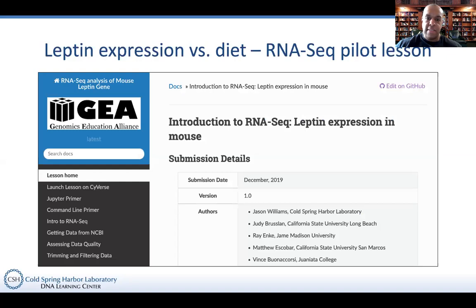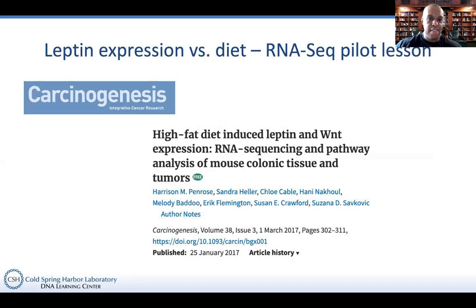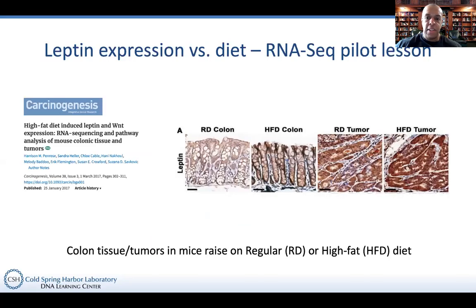Here is the original paper where this data came from, published in the cancer journal Carcinogenesis. They looked at high-fat diet induced leptin and WNT expression and used RNA-seq to examine mouse colon tissue, including tumors. The key thing to know: some mice are raised on a regular diet and some on a high-fat diet, and we can see histology sections of mouse colon tissue — with and without tumors.